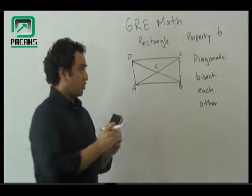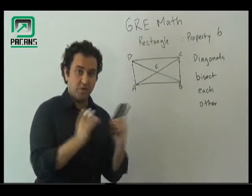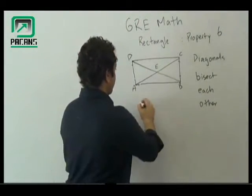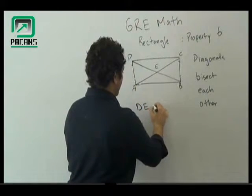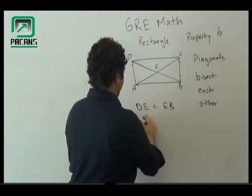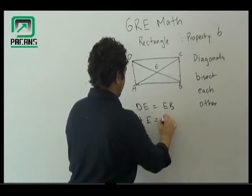So they are going to cut each other into equal parts which are going to be equal to each other. So it's going to be DE is equal to EB and AE is equal to EC.